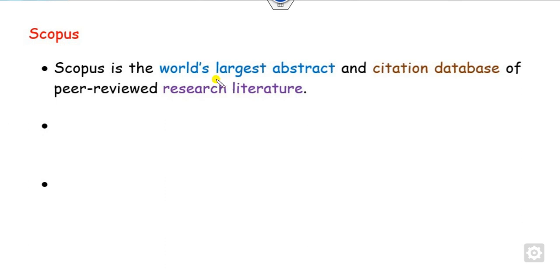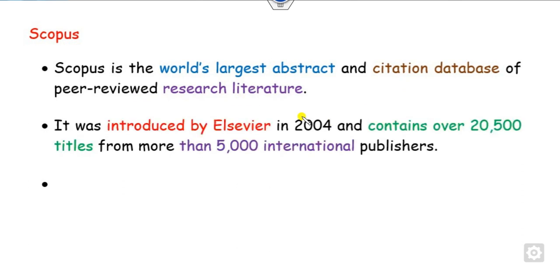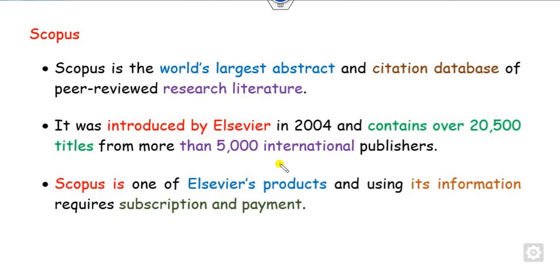Scopus is the world's largest abstract and citation database based on peer-reviewed research literature. It was introduced by Elsevier in 2004 and consists of over 20,000 articles with 5,000 publishers.